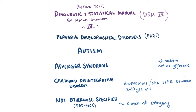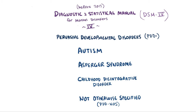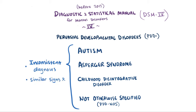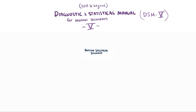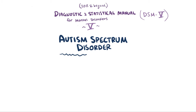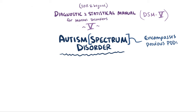Researchers found, however, that separate diagnoses of these pervasive developmental disorders weren't consistent across different clinics, since they tend to have very similar signs and symptoms. As of 2013, the DSM-5, a new revised edition, removed these terms and replaced them with Autism Spectrum Disorder, or ASD, which encompasses all of the previous pervasive developmental disorders, but uses a scale, or a spectrum, that differentiates based on the severity of two major areas.